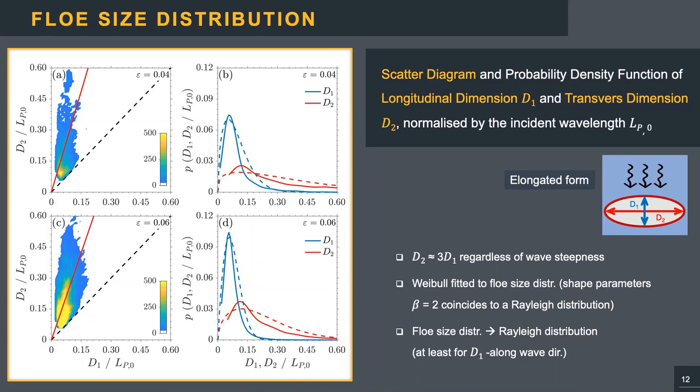After the image processing, it's also possible to evaluate the floe size distribution, here expressed on the left by the scatter diagrams and by the probability density functions on the right, for both the intermediate and large steepness. The data includes all floes detected from all images taken. And for both the steepnesses, the linear fits, the red lines on the scatter diagrams, shows that on average D2 is about three times D1, confirming the elongated floe shapes.